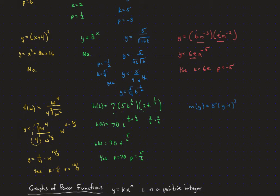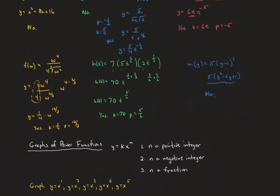The next one — if you multiply out that y minus 1 squared, with all these pluses and minuses, it's not going to be a power function. It's not just y equals k times x to the p.